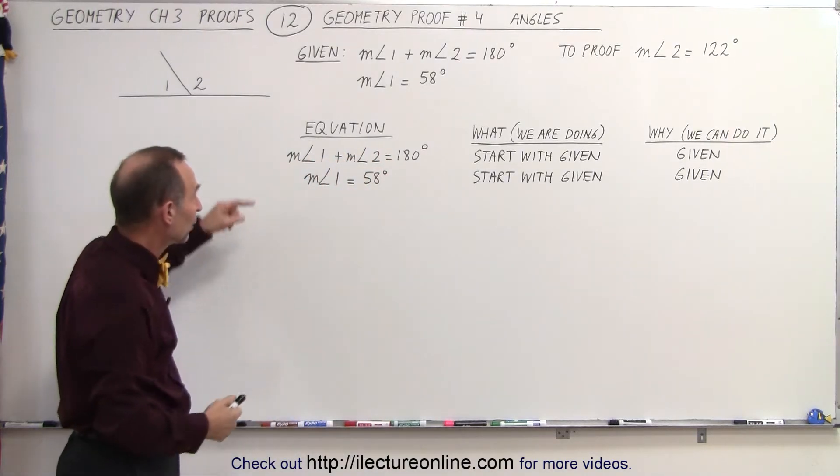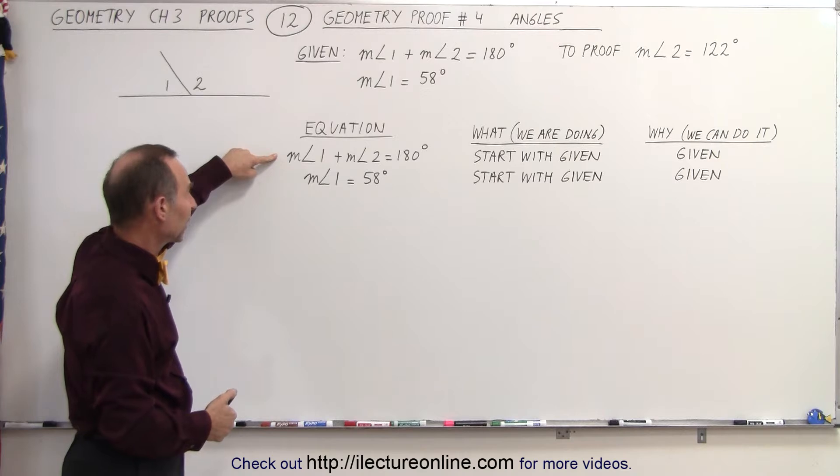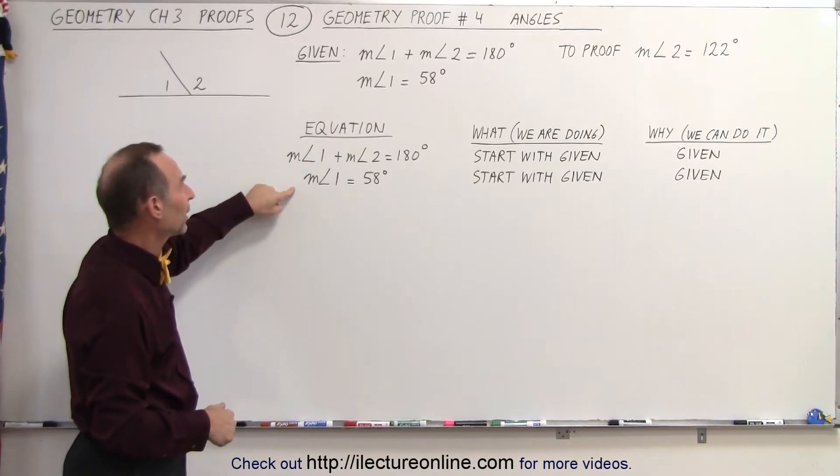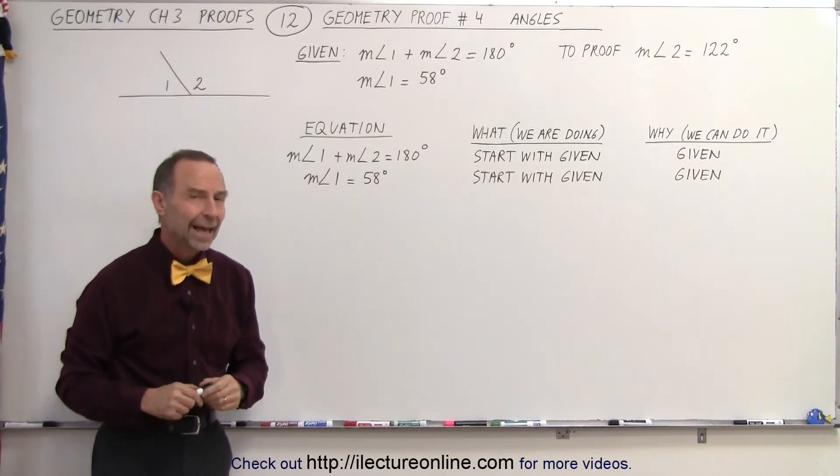So again, we start with what's given. We're given the equation that the measure of angle 1 plus the measure of angle 2 equals 180 degrees, and that the measure of angle 1 equals 58 degrees.